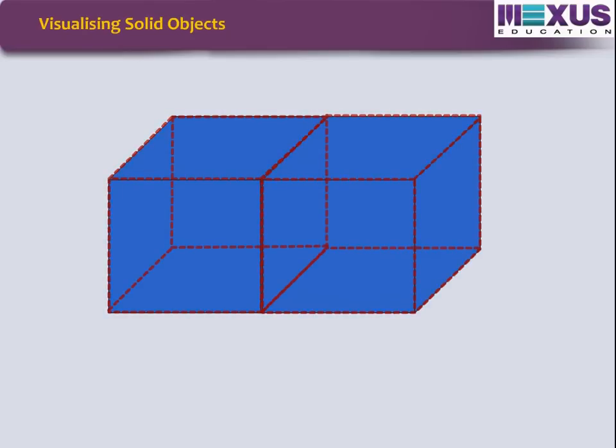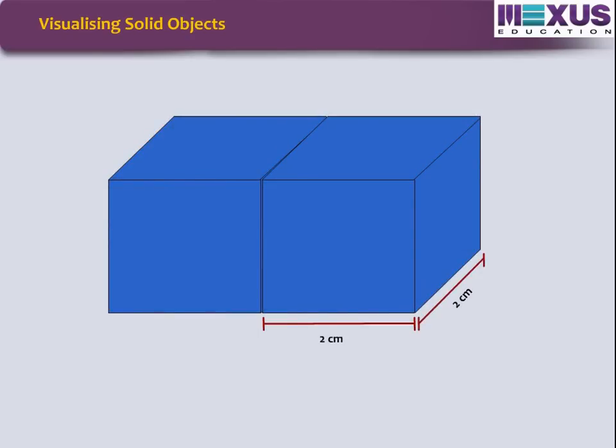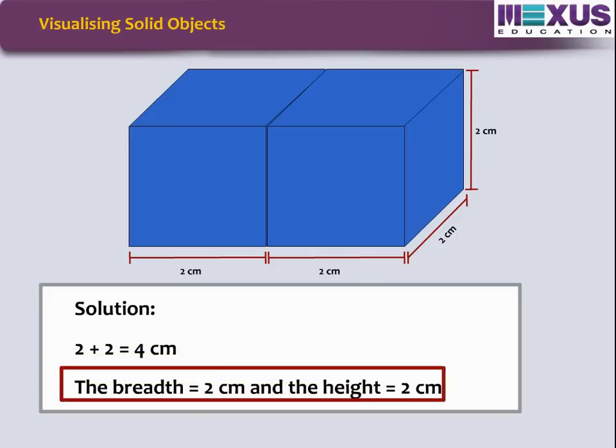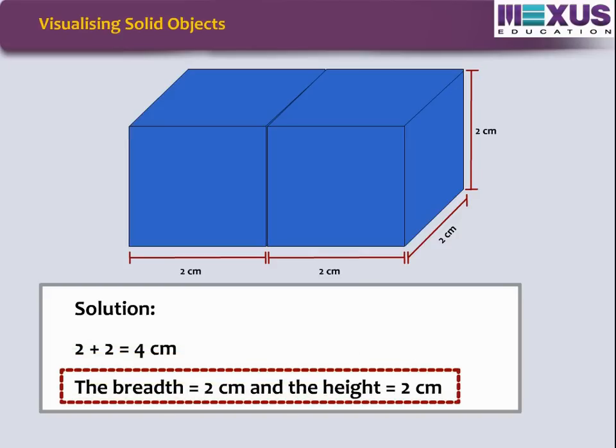If 2 cubes of dimension 2 cm by 2 cm by 2 cm are placed side by side, what would be the dimension of the resulting cuboid? As we can see, when kept side by side, the length is the only measurement which increases. It becomes 2 plus 2 equal to 4 cm, the breadth 2 cm and the height 2 cm.